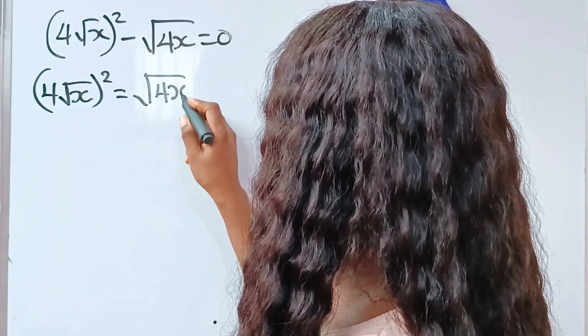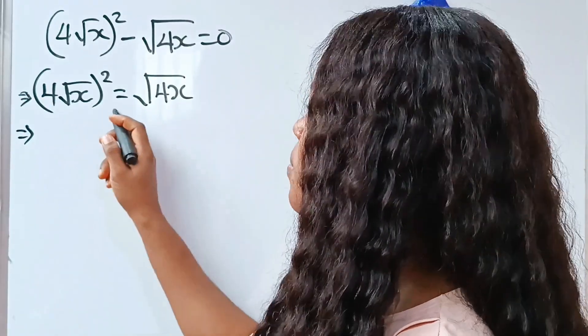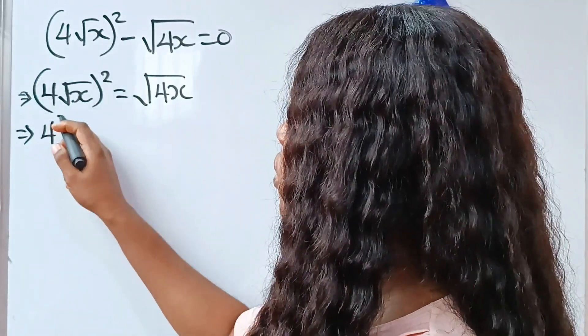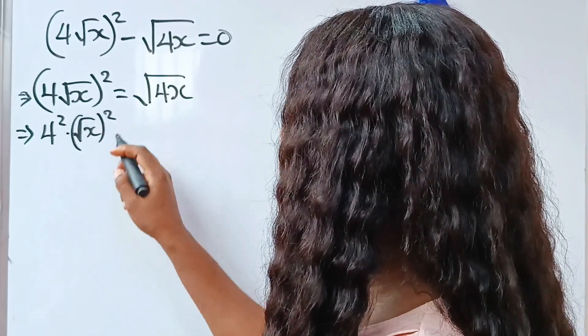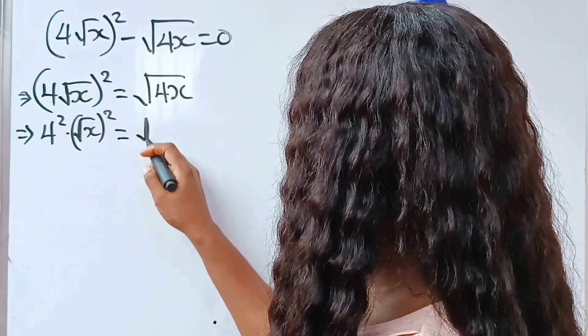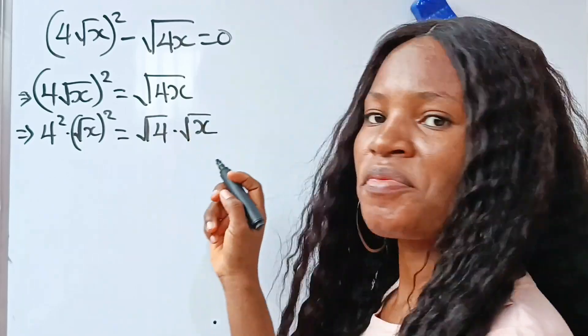So this implies, this bracket, if we open it, we have 4 squared multiplied by root x squared is equal to square root of 4 multiplied by square root of x.